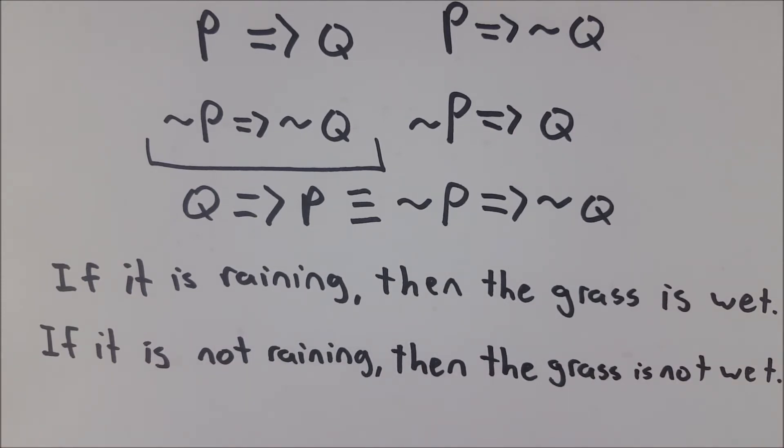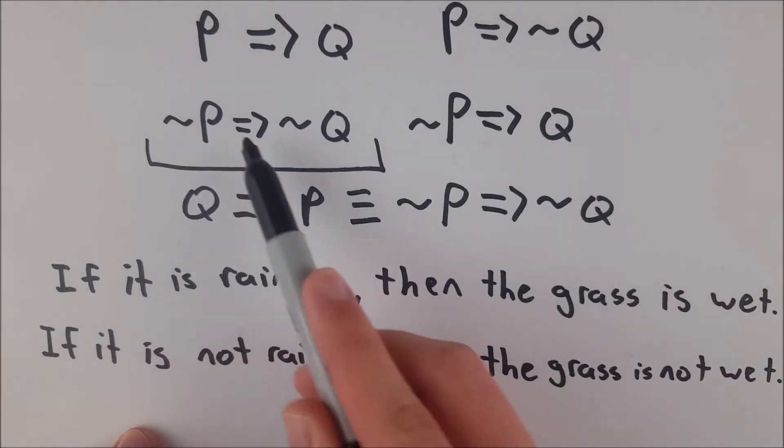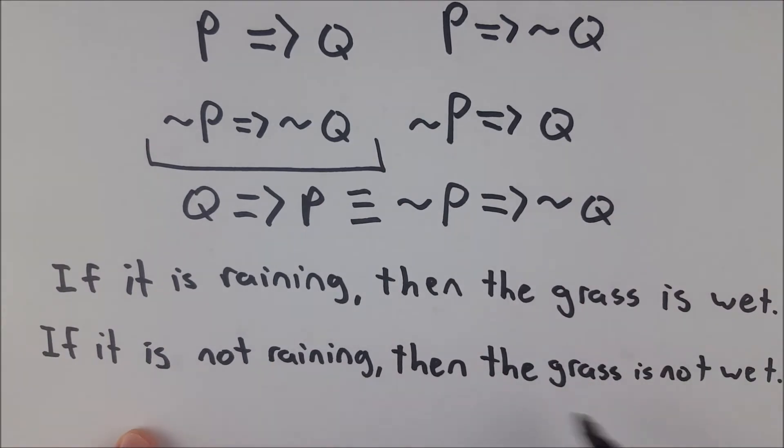So that is what the inverse of a conditional statement, if P, then Q is. It becomes if not P, then not Q, as you can see here.